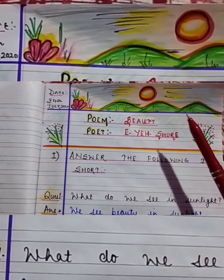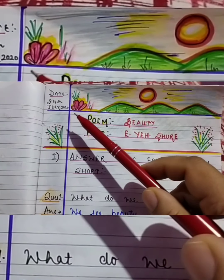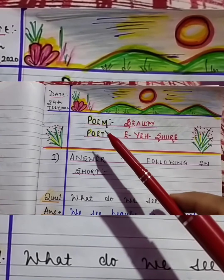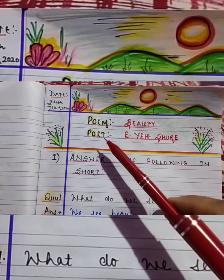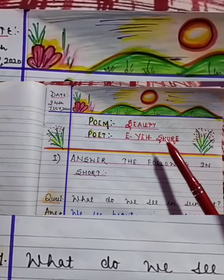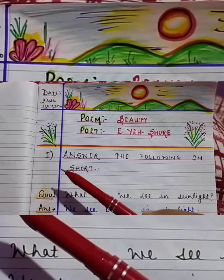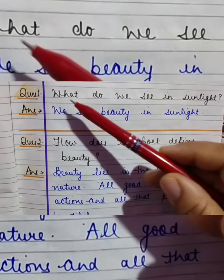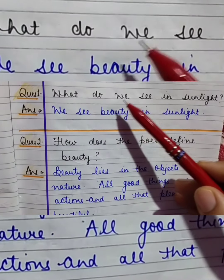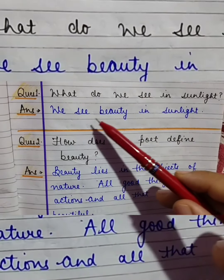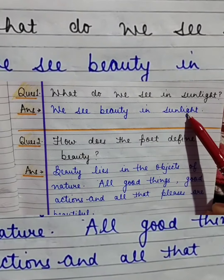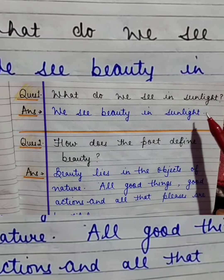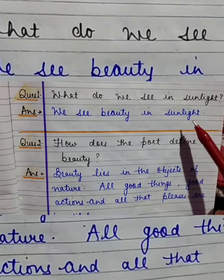Now this is today's assignment. You will write the date, draw a picture, write the name of the poem — Beauty — and the name of the poet. The first question: answer the following in short. Question number one: What do we see in sunlight? Answer: We see beauty in sunlight — when the sun rises and the sun sets, how beautiful it looks.